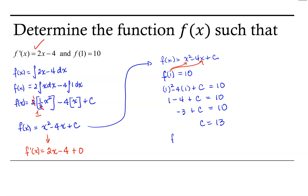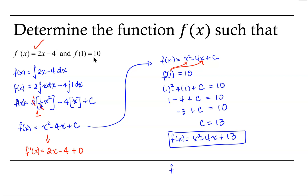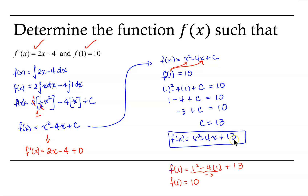So we're claiming that our function f of x is x squared minus 4x plus 13. We've verified that this function has the appropriate derivative. Now let's verify that it produces the correct value. Evaluating our function at 1: f at 1 equals 1 squared minus 4 times 1 plus 13. That's 1 minus 4 is negative 3, and negative 3 plus 13 is, in fact, 10. So f at 1 does equal 10. The function that we're looking for is f of x equals x squared minus 4x plus 13.